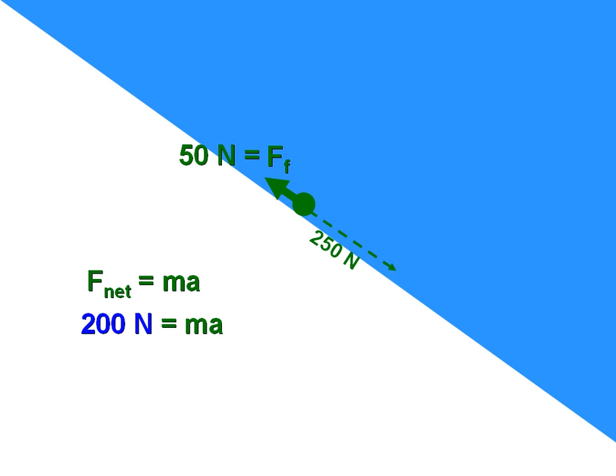And we can find the acceleration by taking 200 newtons divided by the mass. So the mass, we have to figure that out, but if you remember the object weighed 500 newtons, so if you take 500 newtons and divide by 9.8 newtons for every 1 kilogram, we get a mass of about 51 kilograms.